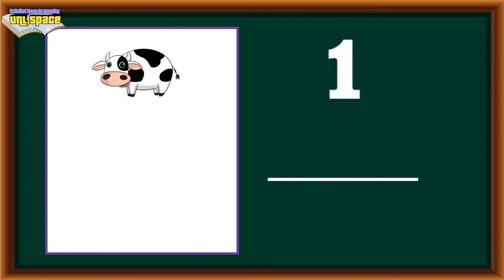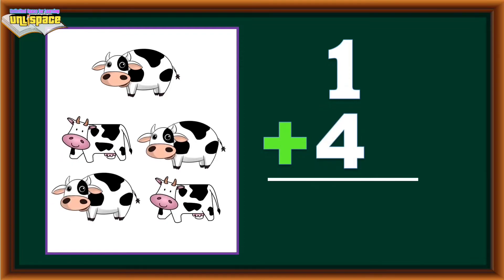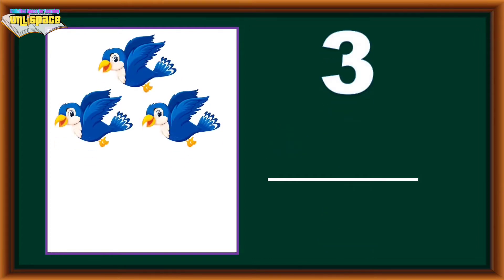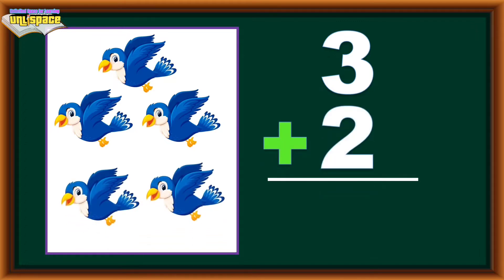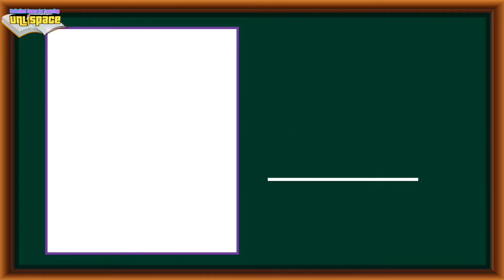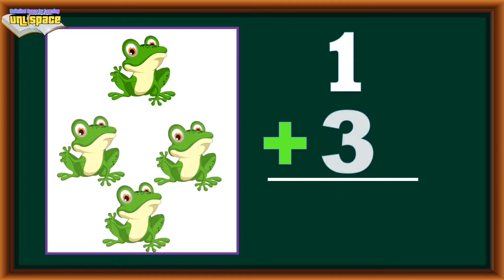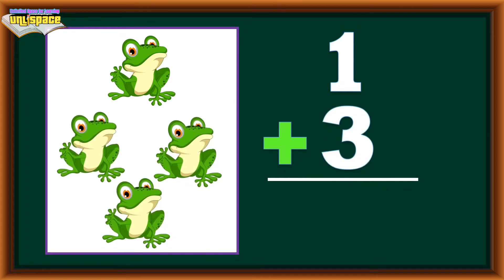1 cow plus 4 cows equals 5 cows. 3 birds plus 2 birds equals 5 birds. 1 frog plus 3 frogs equals 4 frogs.